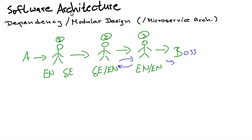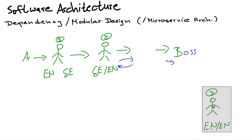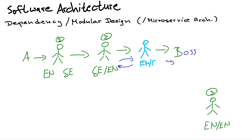What happens now if the boss decides that guy three is getting too much money and they have to let him go? They throw him away and put in a new guy — guy number four — who has the same qualifications and can speak English. As before, a message comes in, guy number one listens and translates to German, guy number two gets the German and wants to translate back to English, but he has some problems and wants to ask guy number four — but guy number four turns out to be very uncooperative.